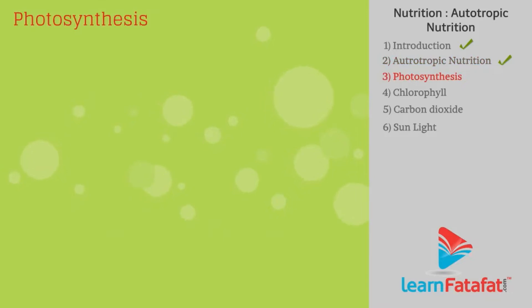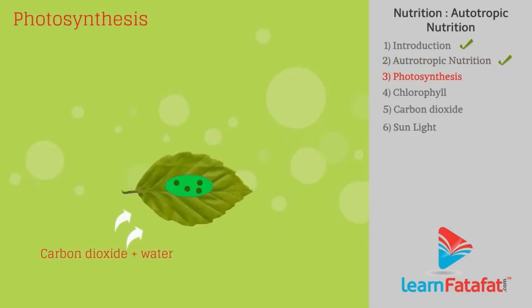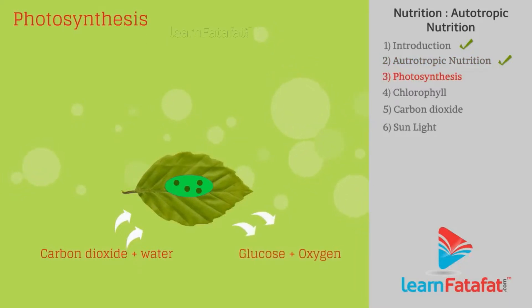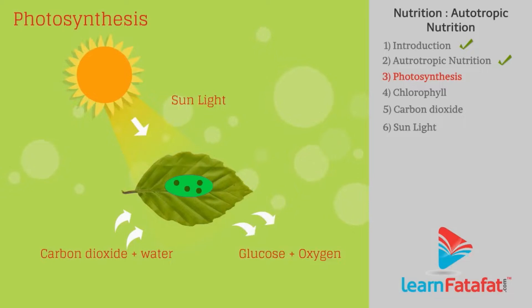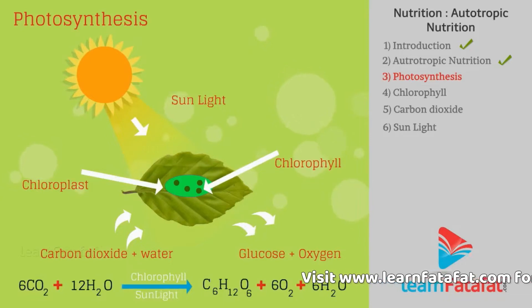Photosynthesis: Autotrophs convert carbon dioxide and water into stored form of energy, i.e., glucose, with the help of sunlight and chlorophyll. This process is known as photosynthesis.